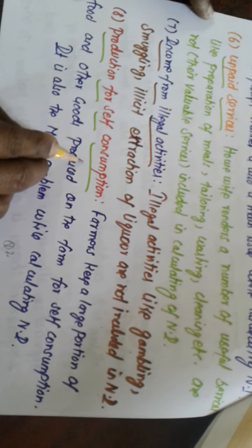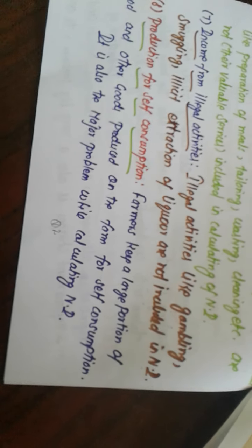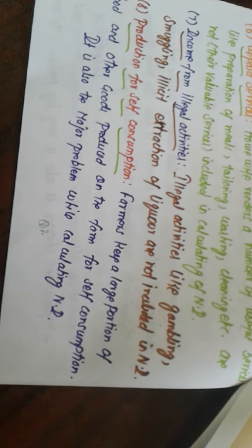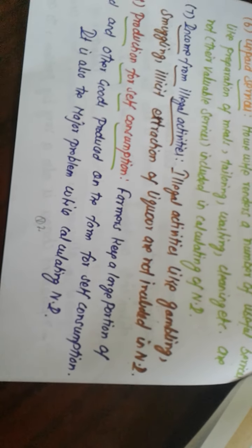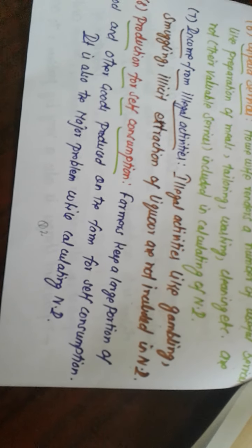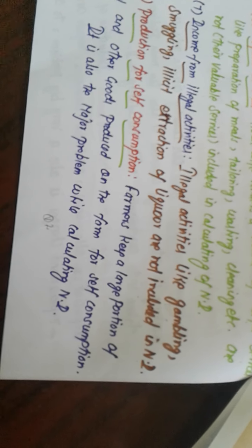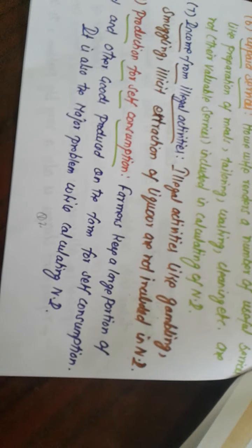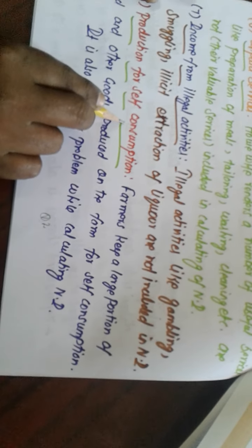Production for self-consumption: farmers, while they undertake agriculture production — for example, in a particular year or season, a farmer produces 500 bags of wheat, corn, rice, or paddy. Out of 500 bags, if 50 bags are taken for their self-consumption, then only 450 bags are taken into account while calculating national income. That 50 bags does not come under national income calculation. That is the concept of production for self-consumption.